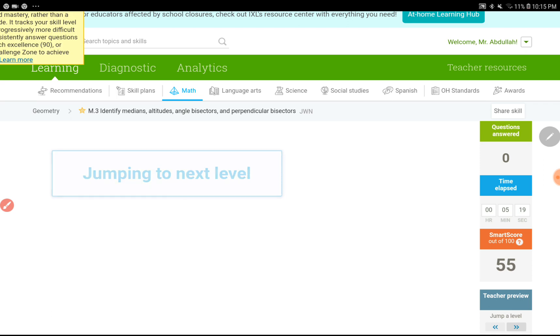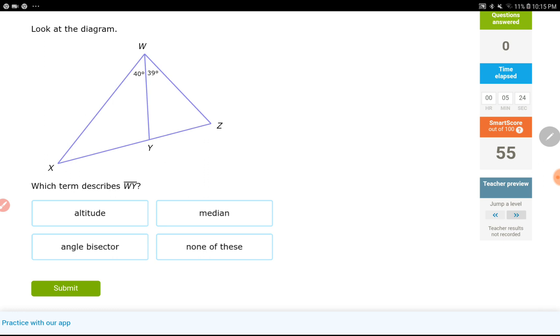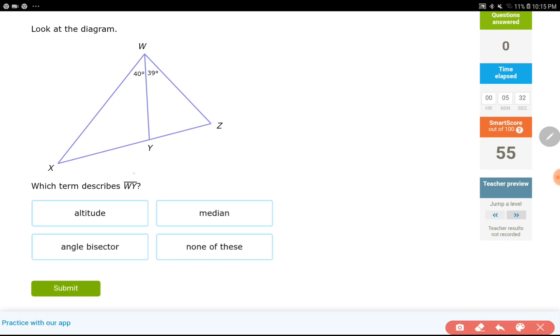Let's see what sort of question we are going to have. It's pretty much the same. Looks like the answer is going to be none of these. I'm taking a guess right now. Let's see. Which term describes WI? WI is right here. It looks like it almost cuts the angle in half, but the angles are not equal. If they're not equal, I'm not talking about an angle bisector.